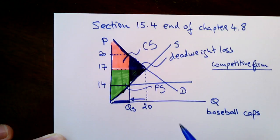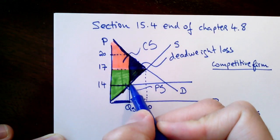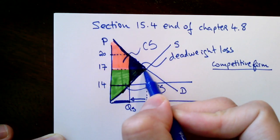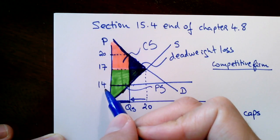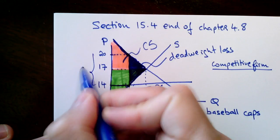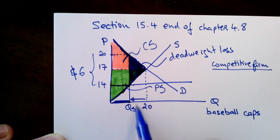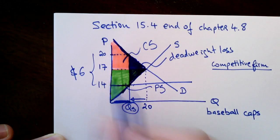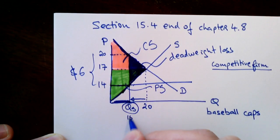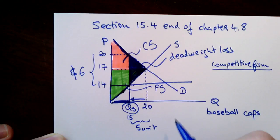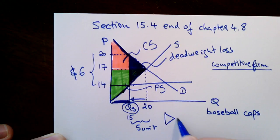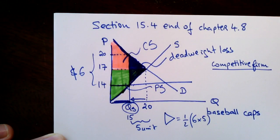We can calculate this deadweight loss by deriving the height and base of this triangle. One side of that triangle is 20 minus 14, which is $6. The other dimension — the base — maybe it's 5 units. To calculate a triangle, a triangle is always half of a rectangle. So the area equals one-half times the height of $6 times the base of 5, which gives you the deadweight loss in dollars.